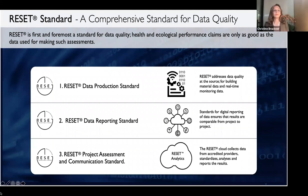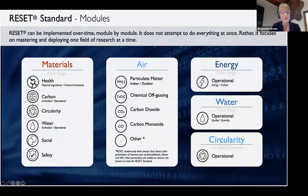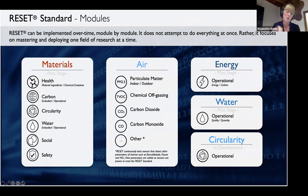The Reset standard has several modules: materials, air, energy, water, and circularity. Some are in pilot stage, but the air quality module is the one we're most known for, and that's what we're going to be talking about today. There are also different statuses in the Reset certification process, from an entry-level certification to Reset full certification. Each stage represents projects as they move towards certification, but they're all noteworthy in their own right.